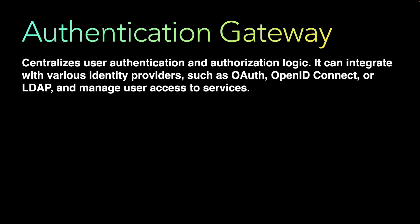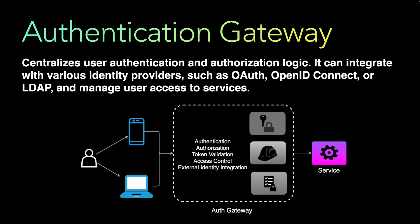Moving on to the authentication gateway, which centralizes user authentication and authorization logic. It handles authentication by verifying the identity of users through username/password, multi-factor authentication, and integration with third-party identity providers such as OAuth providers, LDAP, and Active Directory. It also performs token validation — for example, validating and decoding JSON Web Tokens (JWTs) to ensure their integrity and authenticity.